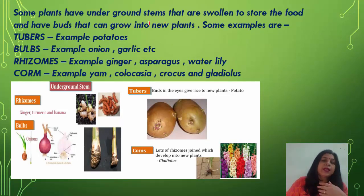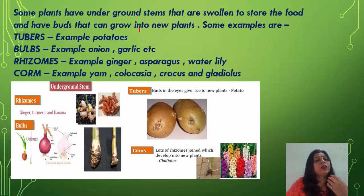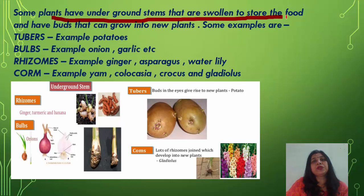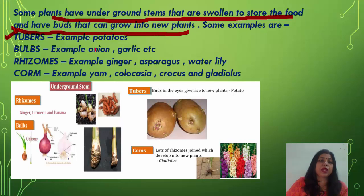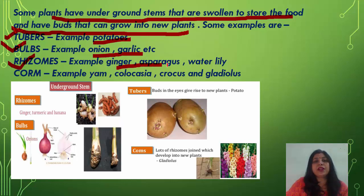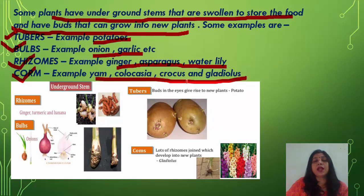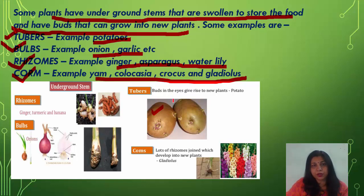Some plants have underground stems that are swollen to store food and have buds that can grow into new plants. Examples include potato tubers, bulbs of onion and garlic, rhizomes such as ginger and asparagus, and corms such as Colocasia, Crocus, and Gladiolus. You can see these in the figure — potato tuber, bulb of onion and garlic, rhizomes of ginger and turmeric, and corms of Gladiolus.